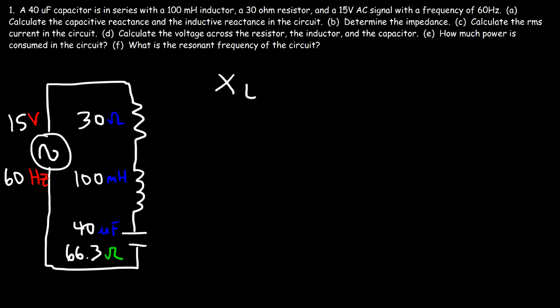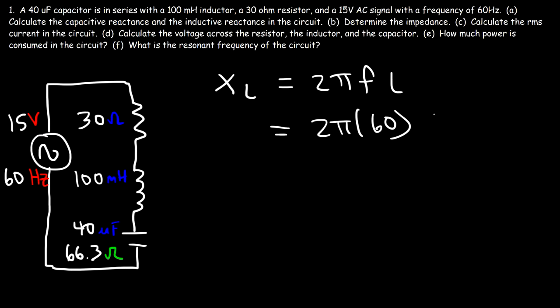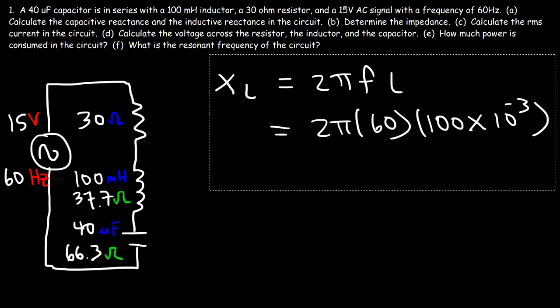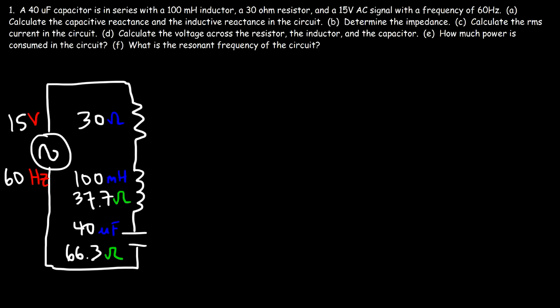Now let's calculate the inductive reactance, represented by the symbol XL, and that's equal to 2πFL. The inductance L is 100 millihenries, so that's 100 times 10 to the minus 3 henries. XL is 37.7 ohms.